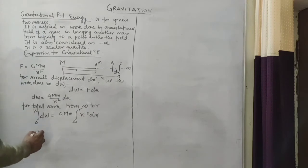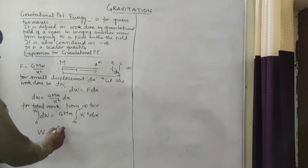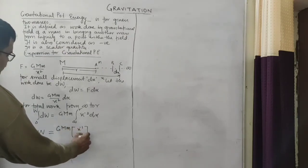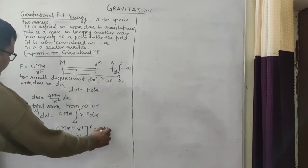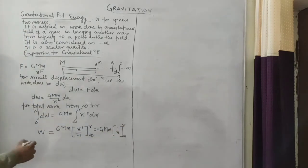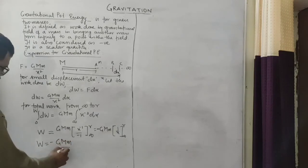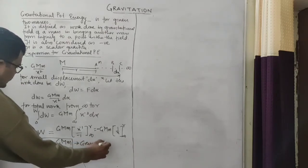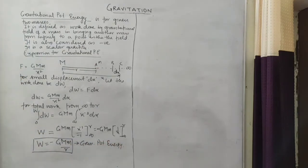Integrating, the limits go from 0 to W. We get G·M·m times the integral of X to the power minus 2, which gives X to the minus 1 upon minus 1, evaluated from infinity to R. Taking the minus sign outside: minus G·M·m times 1/X from infinity to R. So the work done — which is the gravitational potential energy — equals minus G·M·m upon R. This is gravitational potential energy for any mass, and it is generally denoted by capital U.